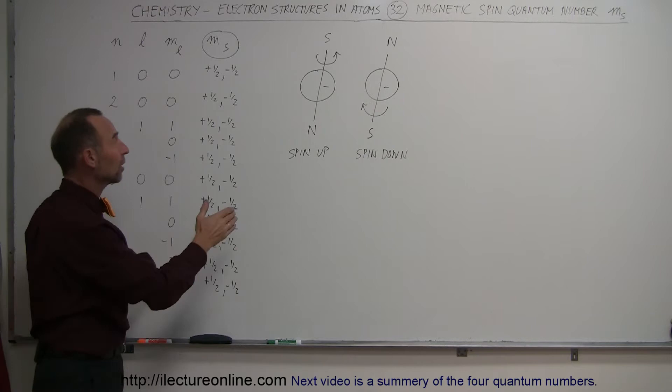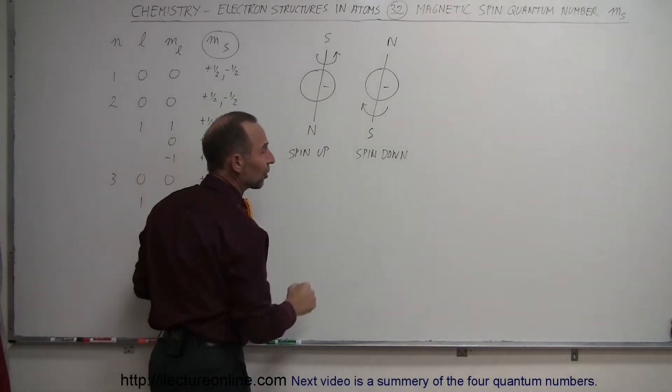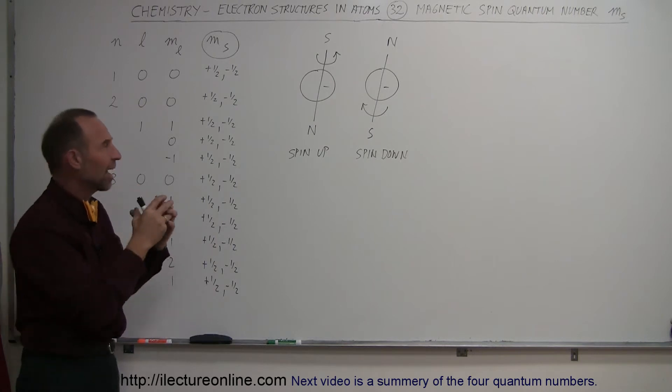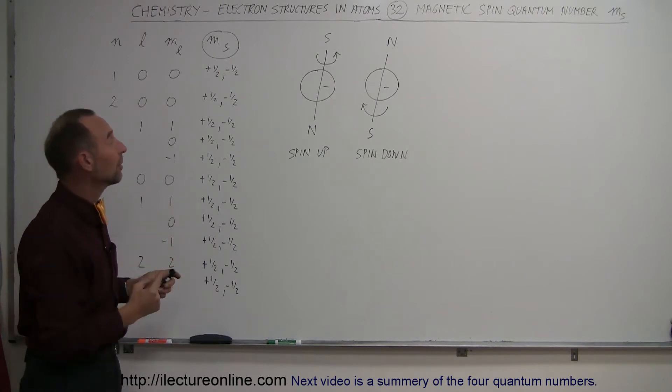What that means is that electrons are particles as much as they are waves. They behave like waves, but they're still particles. They have mass, they have volume, and yes, they do spin on their axis.